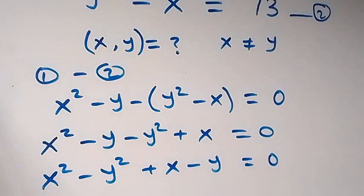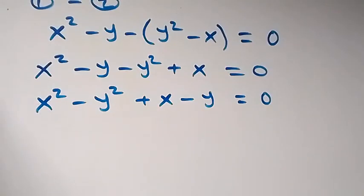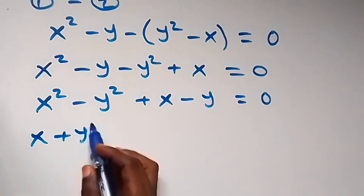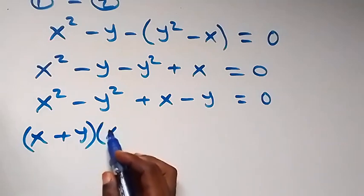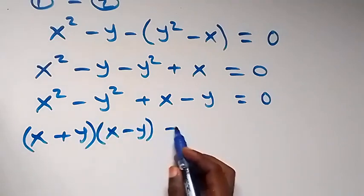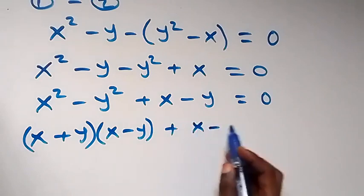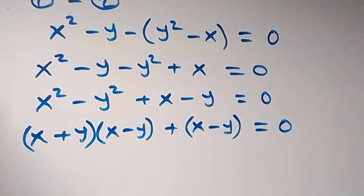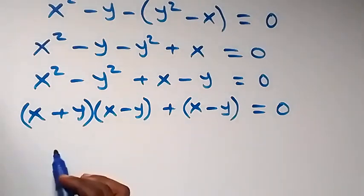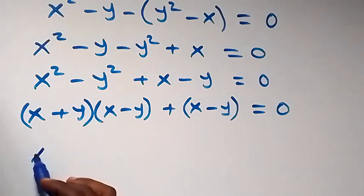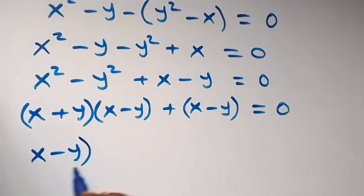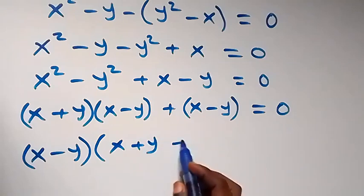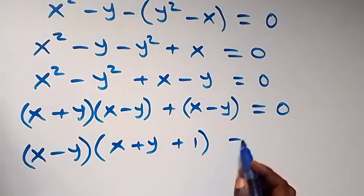Equals to zero. We have a difference of squares which we can write as (x plus y) multiplied by (x minus y), then plus x minus y, close brackets, now equals to zero. We factor out x minus y, so we have x minus y times (x plus y plus one) equals to zero.